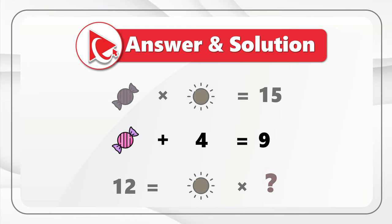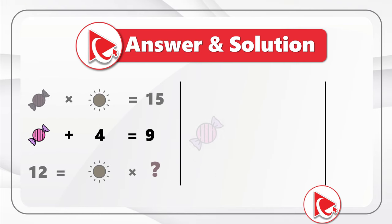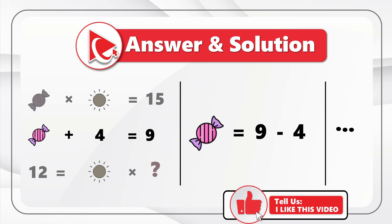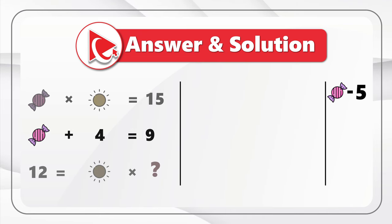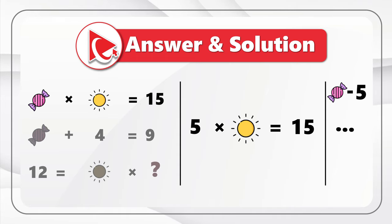Let's start with the expression: candy plus 4 equals 9. Believe it or not, we can actually calculate it. Candy equals 9 minus 4, so the value of candy equals 5. Now knowing the value of candy, let's focus on the top expression: candy multiplied by sun equals 15. We know candy is 5, so substituting gives us 5 multiplied by sun equals 15 — so the calculated value for sun would be 3.